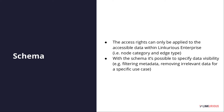Before going into the demo, we need to mention the schema. All access rights in Linkurious Enterprise can only be applied to accessible data. You have the possibility to filter out some information — specifically, you can make some node categories or edge types unavailable in Linkurious Enterprise. This is useful when your external data source is used by different tools and some metadata properties or node categories are not relevant for Linkurious Enterprise.